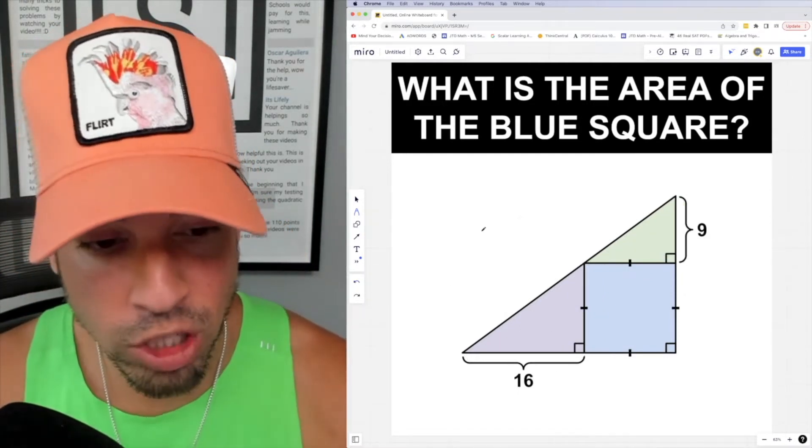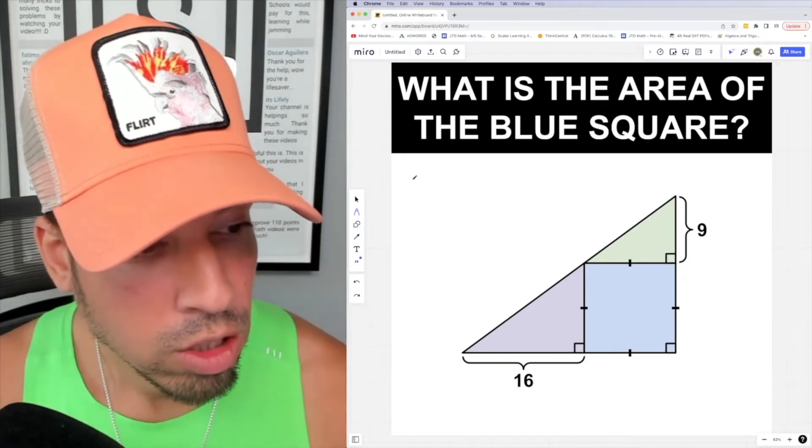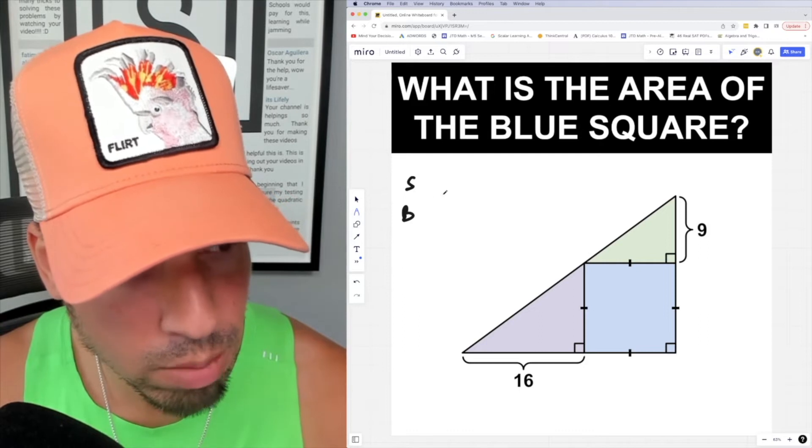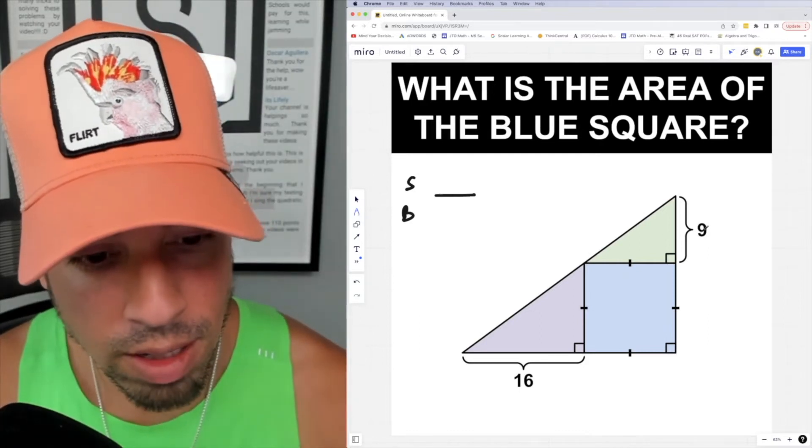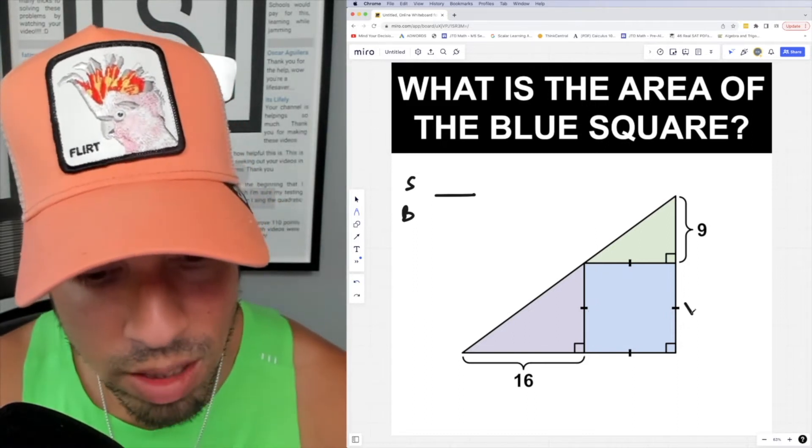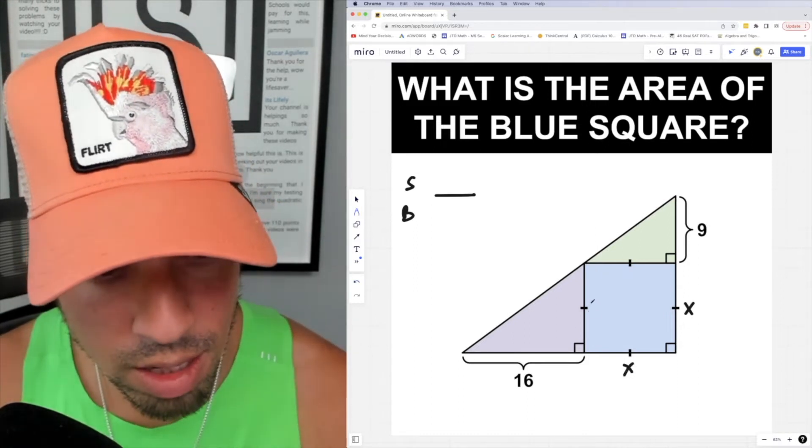...is set up a proportion as follows. We'll do small triangle on the top and big triangle on the bottom. So check it out: I've got a value of nine being related to this side. Well, I don't know what this side is, but why don't I call it x because all these sides are the same.